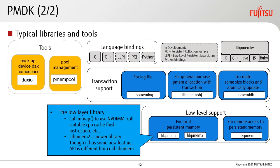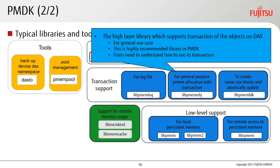Some key libraries and tools include libpmem and libpmem2 — low-level libraries that call mmap to use NVDIMM and invoke the appropriate CPU cache flush instructions. libpmem2 is a newer library than libpmem with new features, though its API differs from the older libpmem.